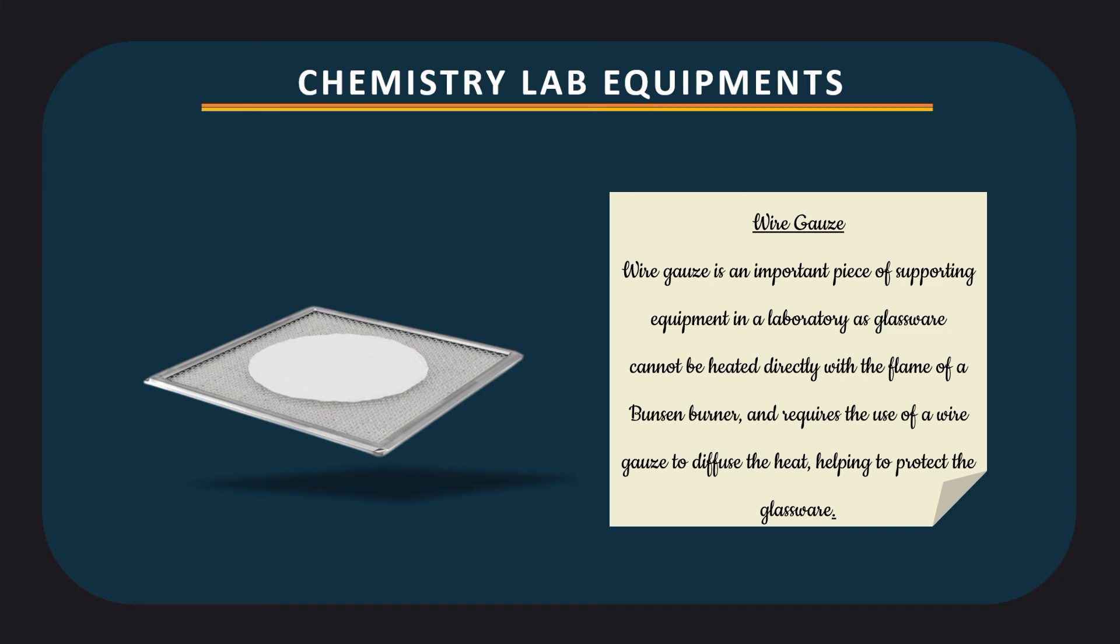Wire gauze. Wire gauze is an important piece of supporting equipment in a laboratory as glassware cannot be heated directly with the flame of a Bunsen burner and requires the use of a wire gauze to diffuse the heat, helping to protect the glassware.